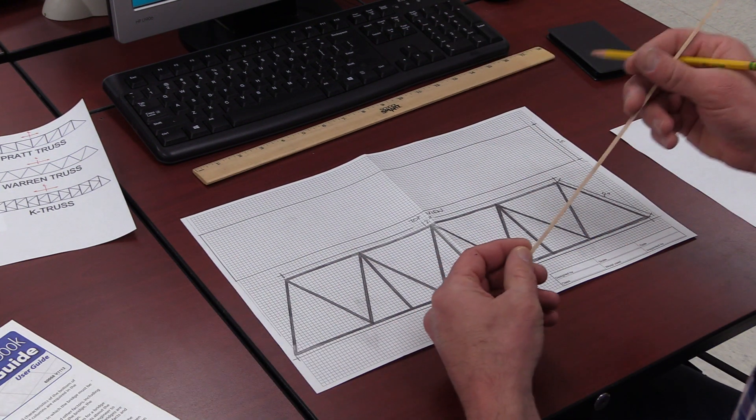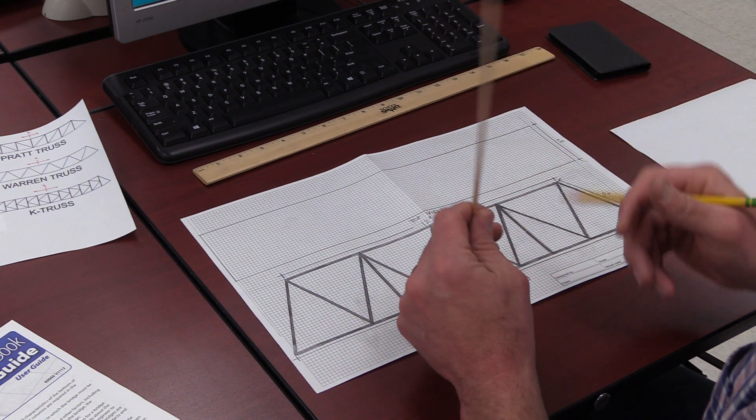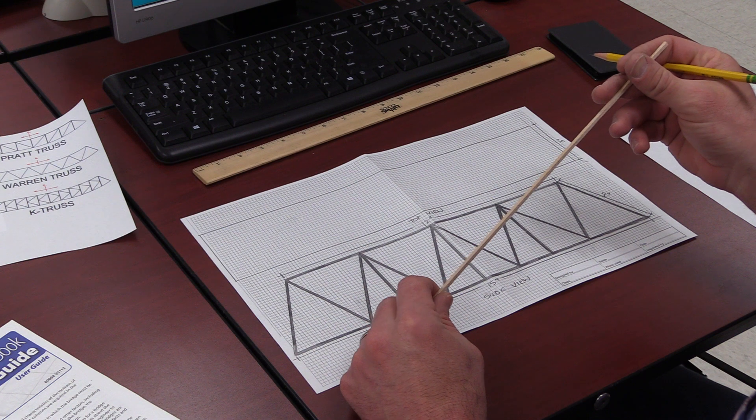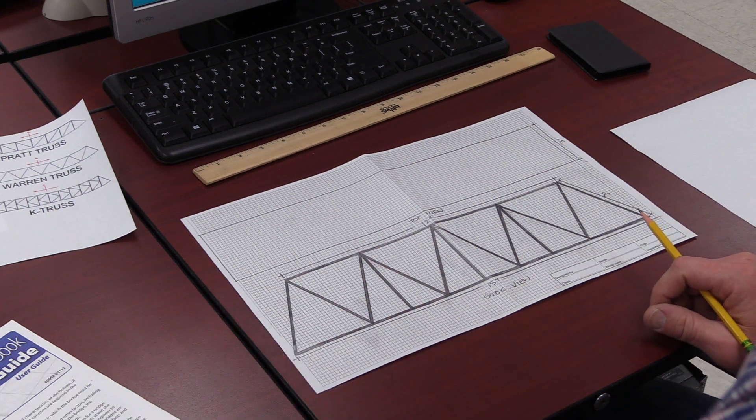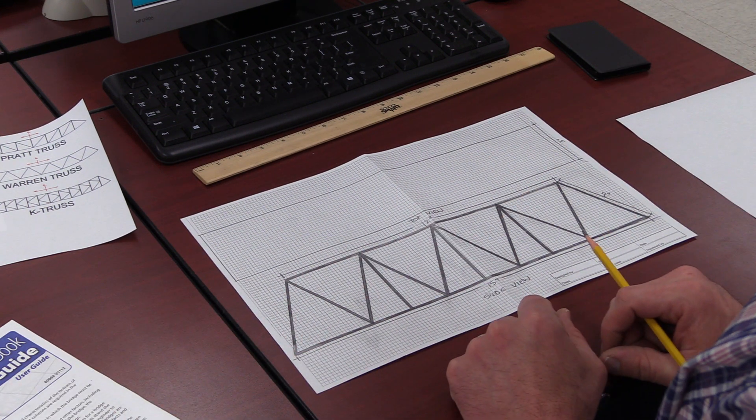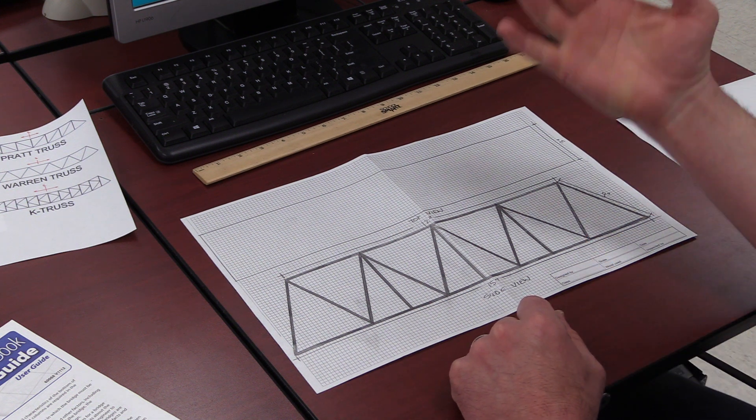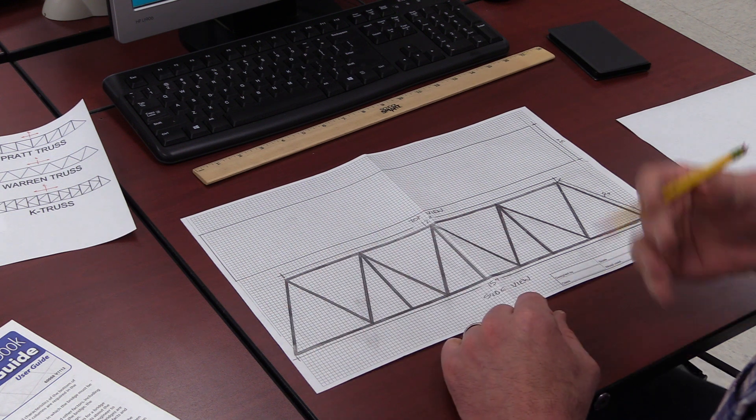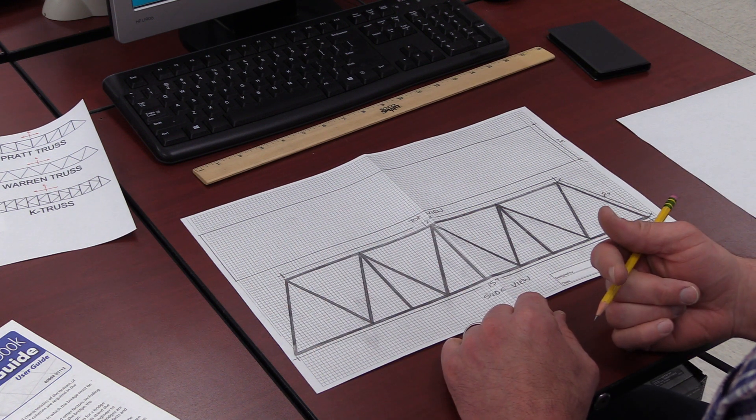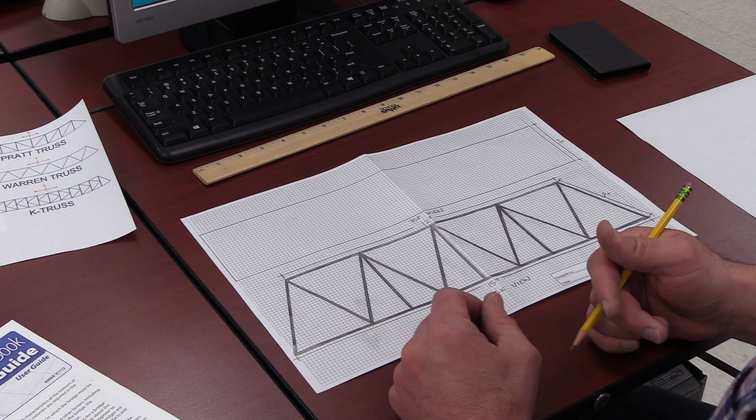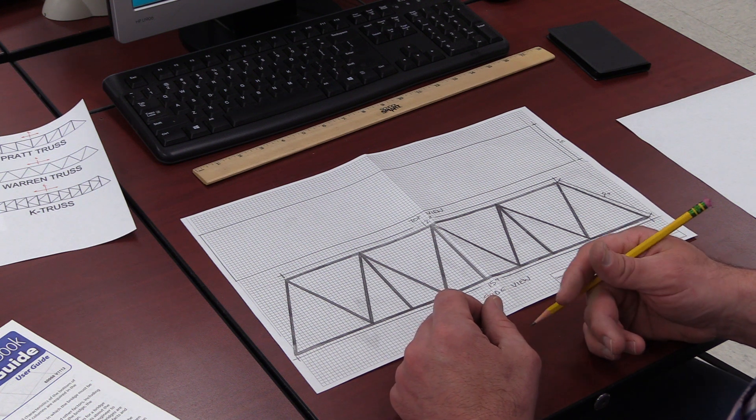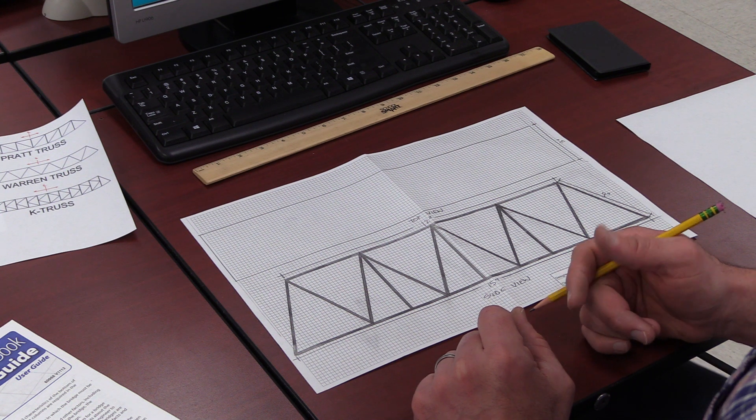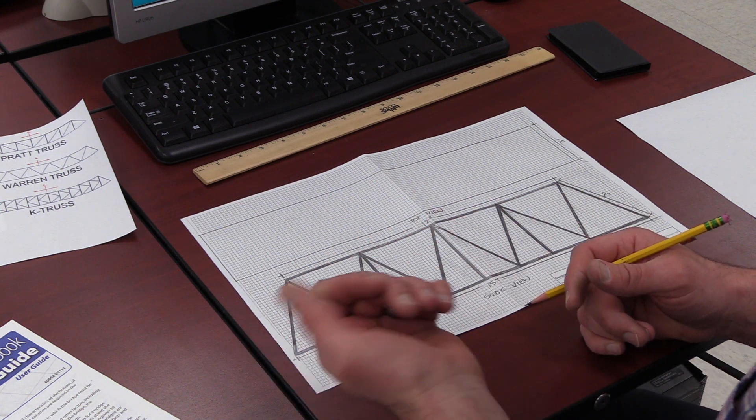Everybody's going to be given ten of these balsa wood sticks. Each stick is 24 inches long, so you're going to start with 240 inches of material and you don't want 100 inches left over. Ideally you want to give yourself maybe ten inches of balsa wood left over in case something snaps or breaks. But nonetheless you don't want to sell yourself short and you don't want to run out of material.